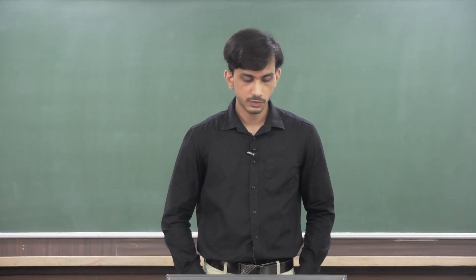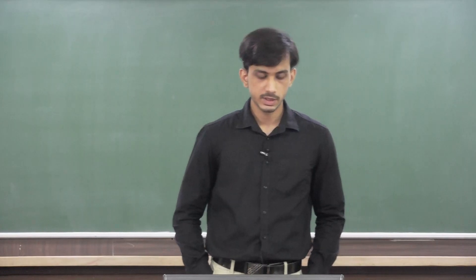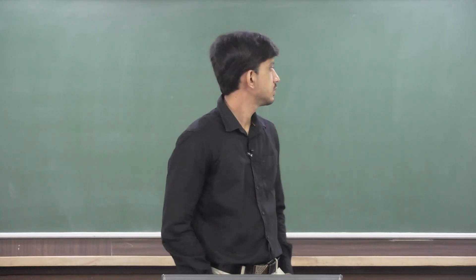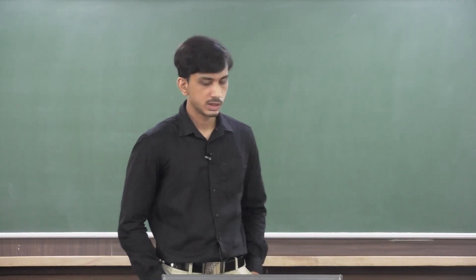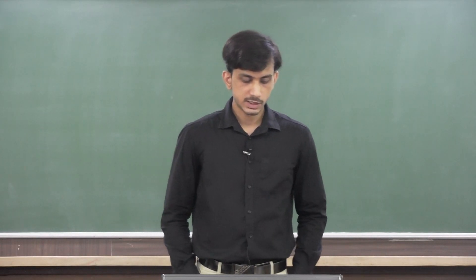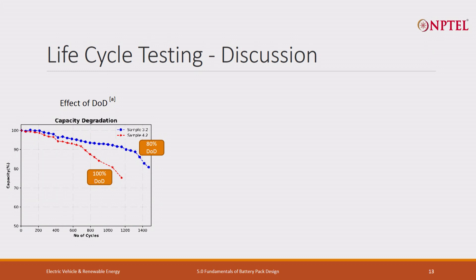This particular test was performed from 10% to 90% SOC. For 100% DOD, the entire capacity of the cell is used, right from 0% to 100% SOC. The 80% DOD cell lasts around 1500 cycles until it reaches 80% of its capacity, which is taken as the end of life. The cell cycled at 100% DOD gives around 1000 cycles, which means that if you use a higher DOD, you will get fewer cycles.